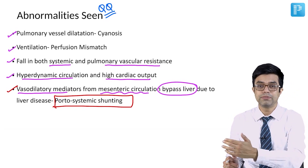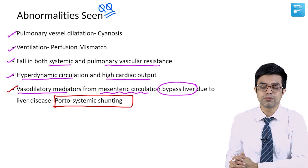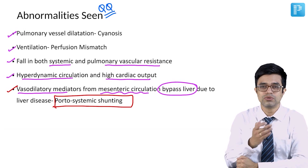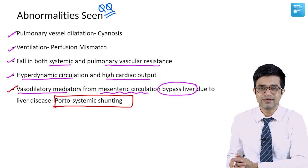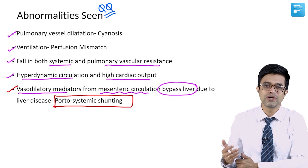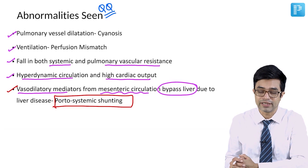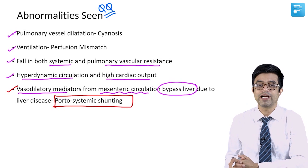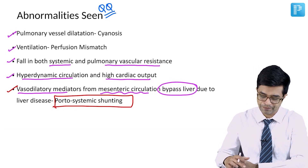Why do only certain people develop hepatopulmonary syndrome while others do not? There are a lot of theories, but no consensus regarding the reason for that. It is still an area of active research.